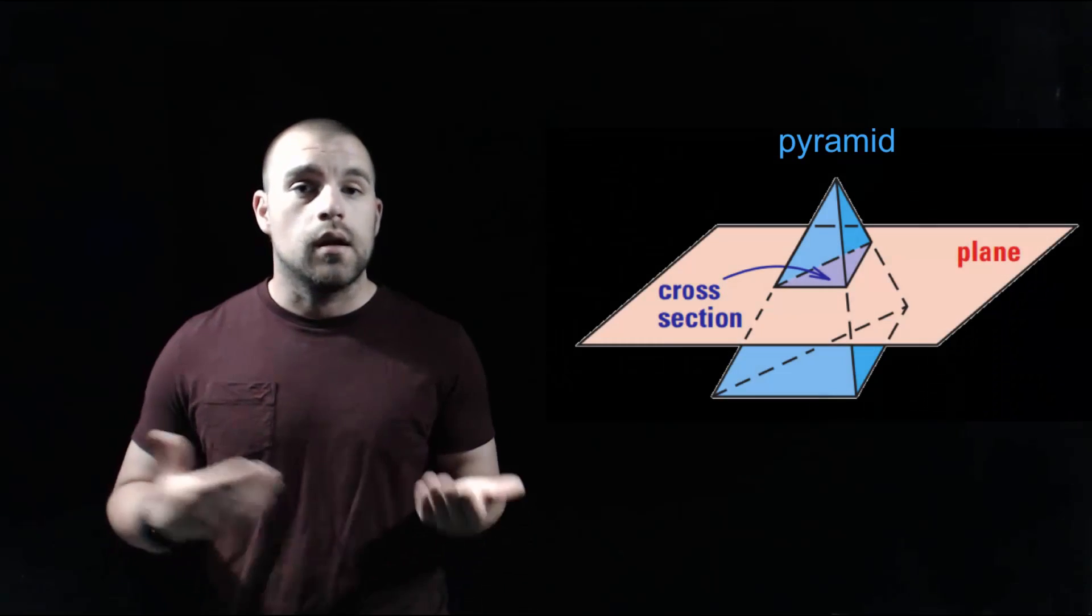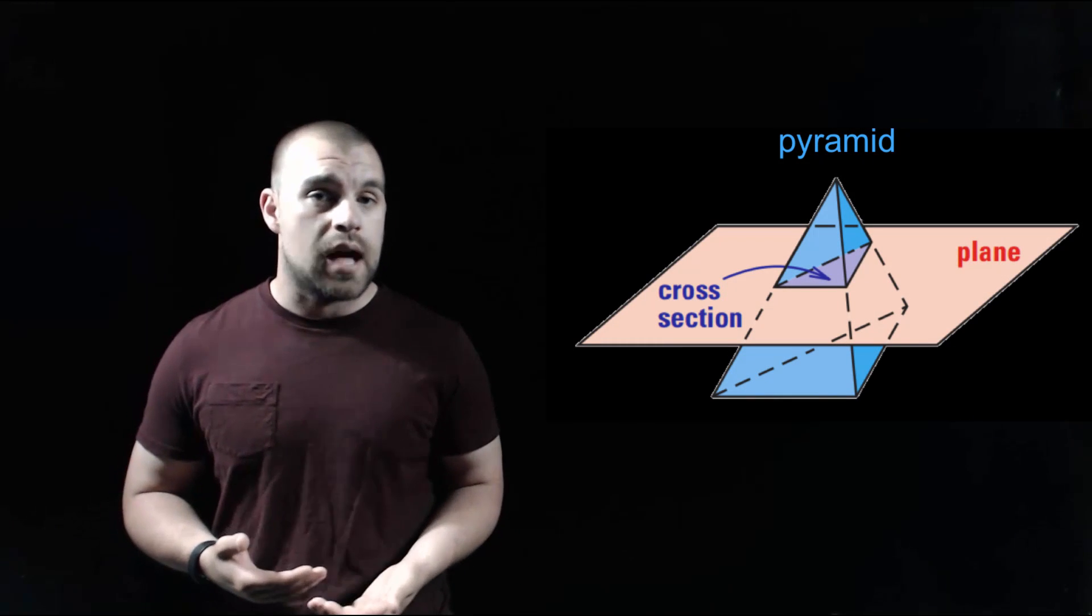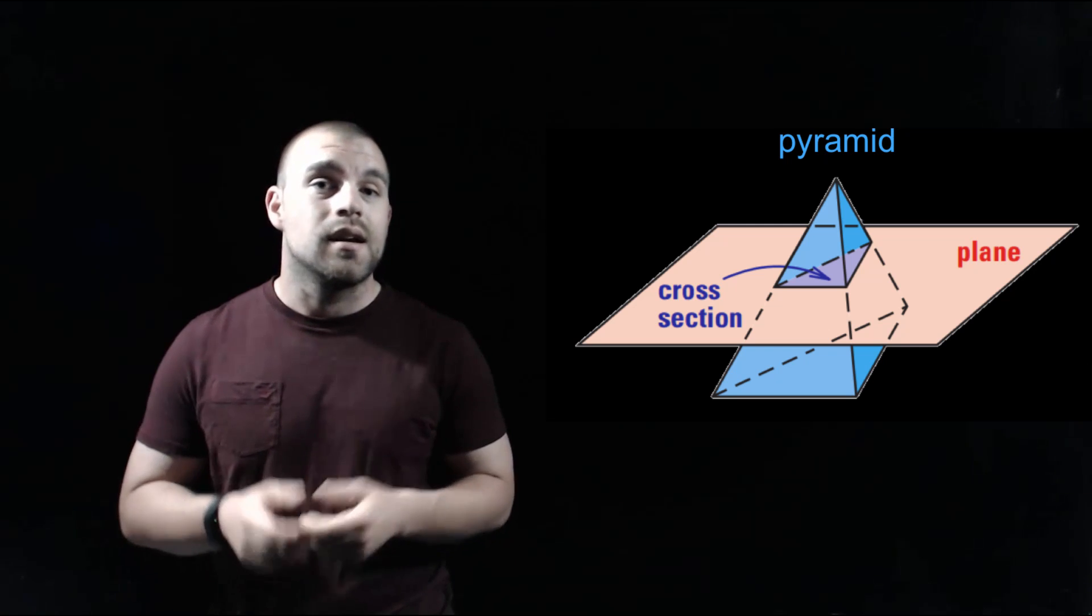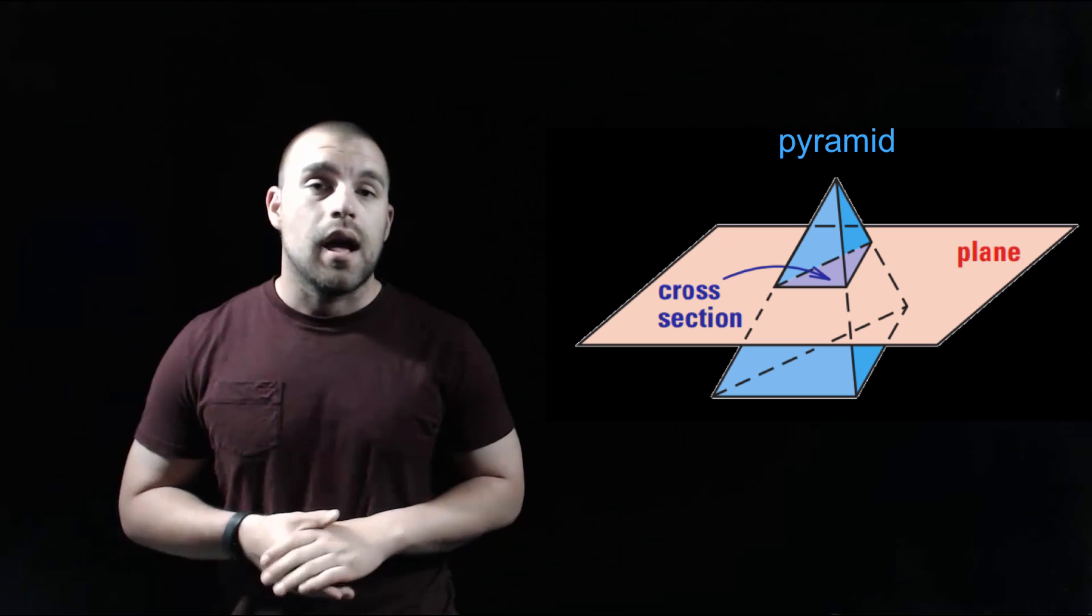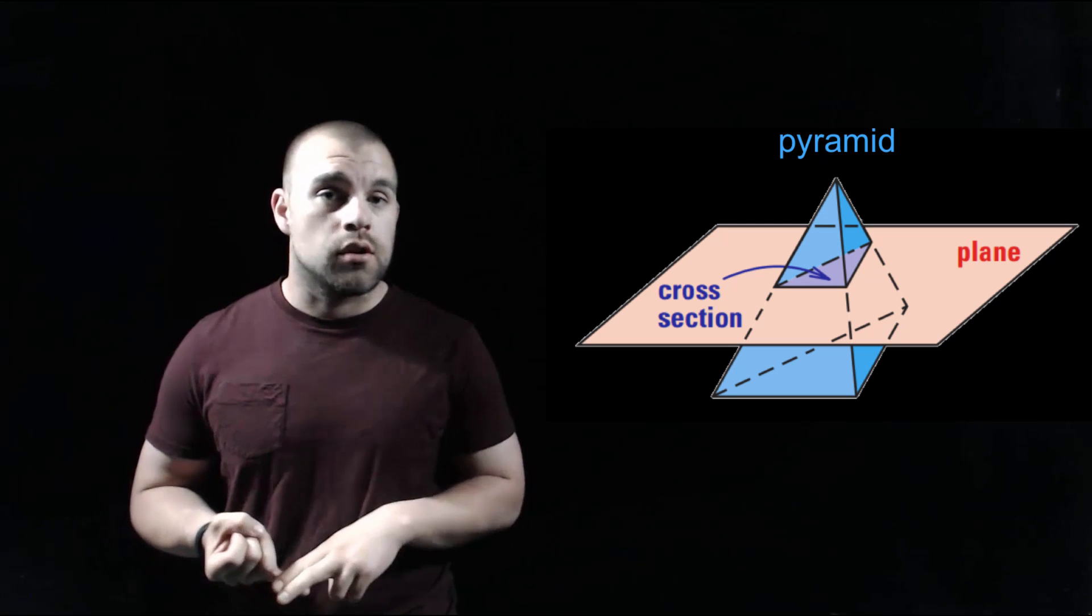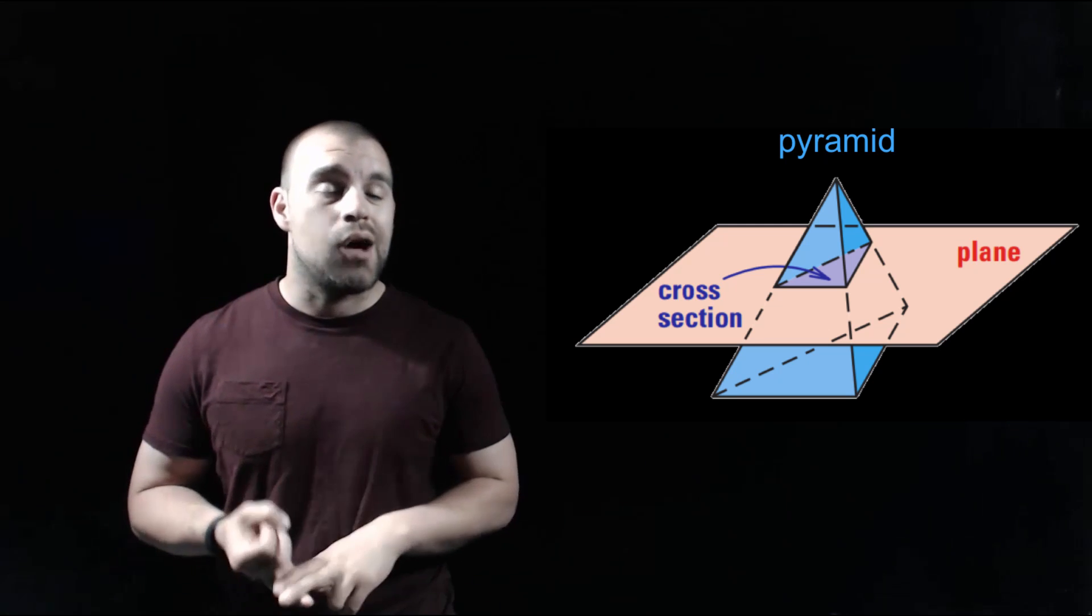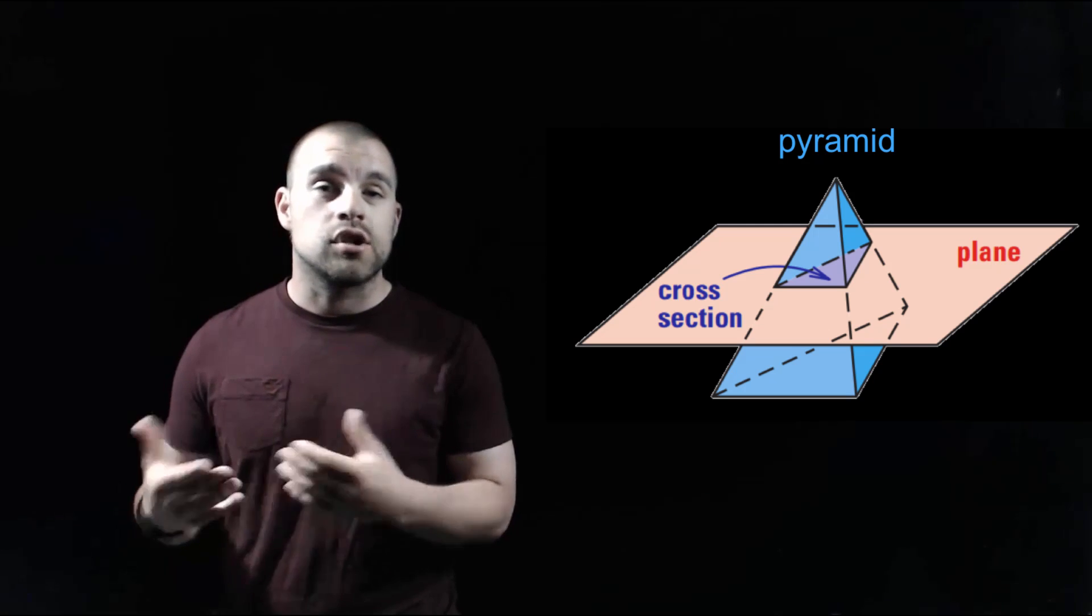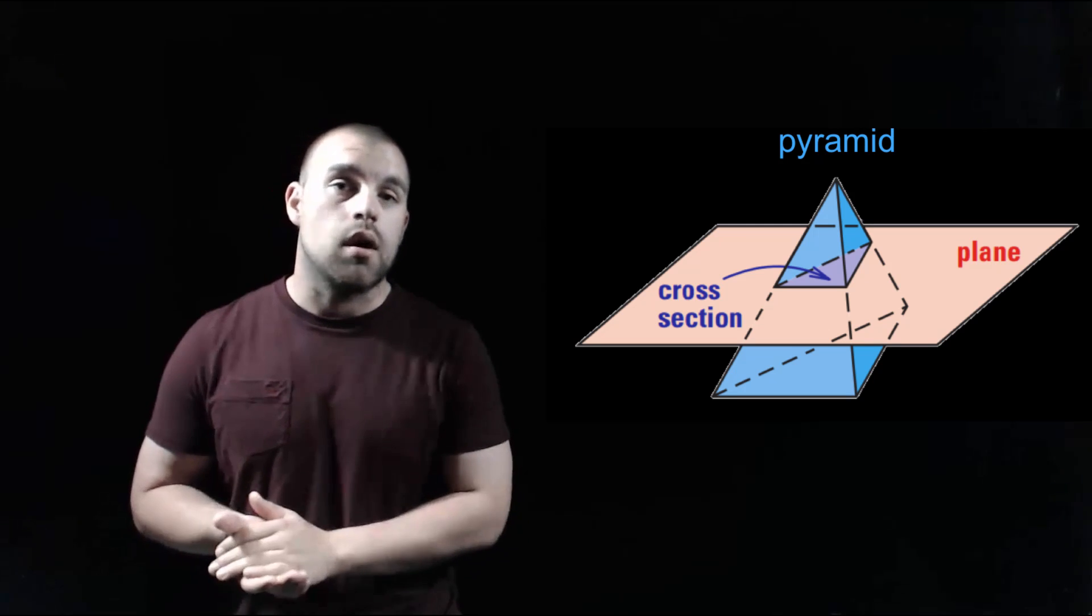The last thing we're going to talk about in this video are things called cross sections. Imagine a two-dimensional plane cutting through a three-dimensional solid. The place where the plane and the solid intersect is called a cross section. Depending on what our original solid looks like and how the plane is intersecting the solid, that can affect what different shapes are made by these cross sections.